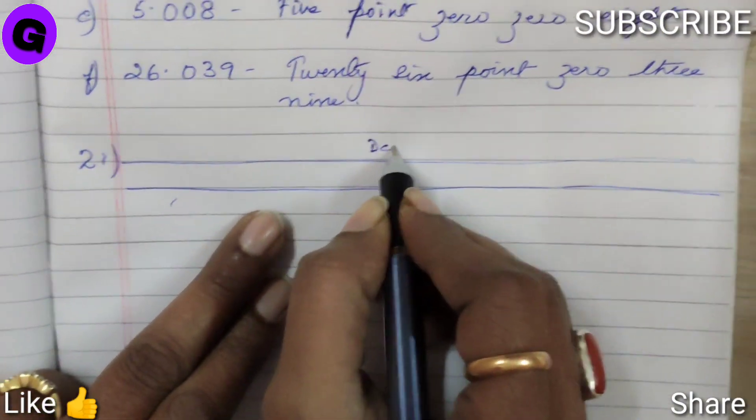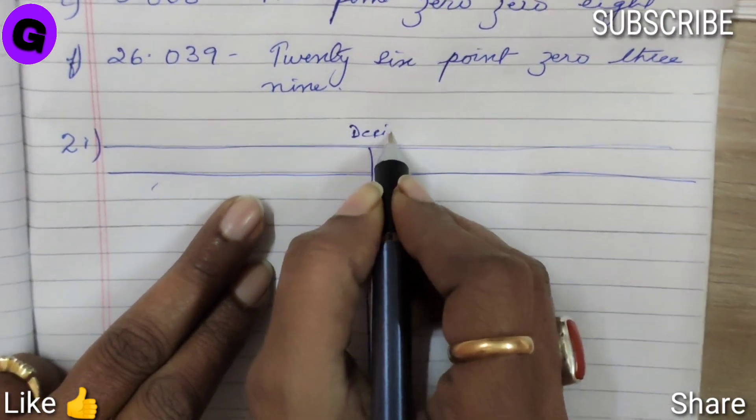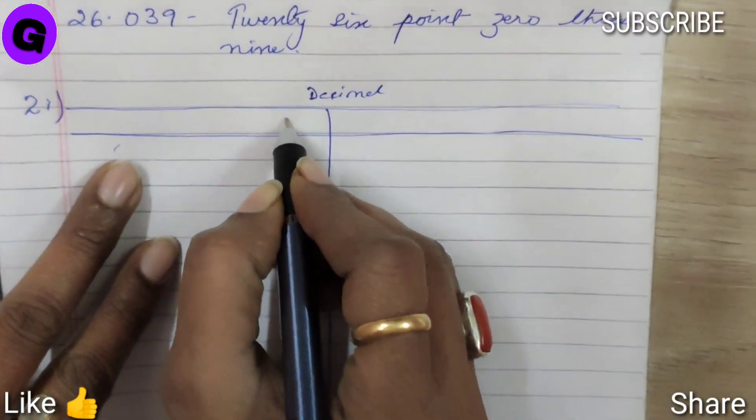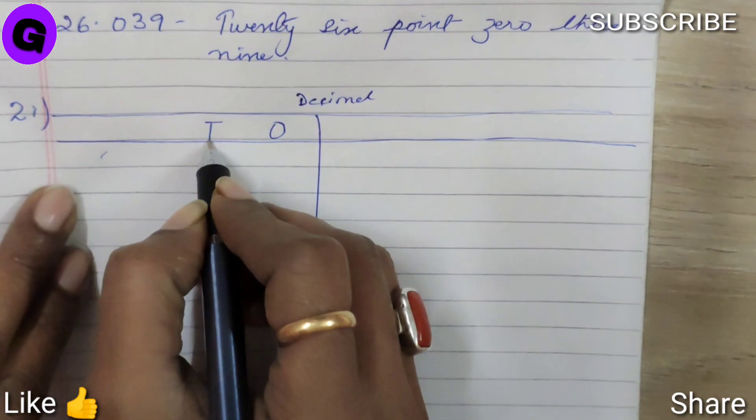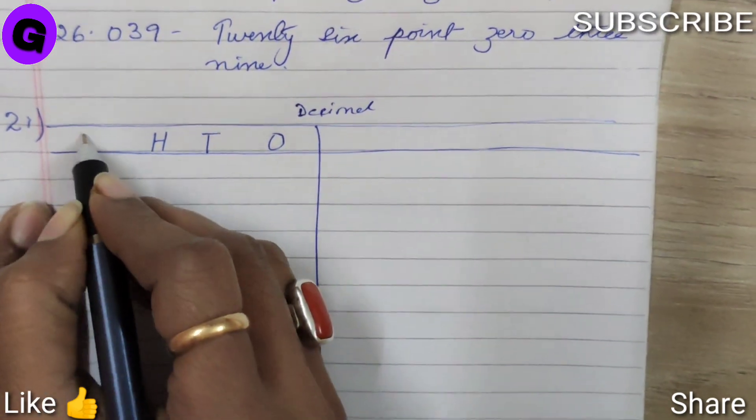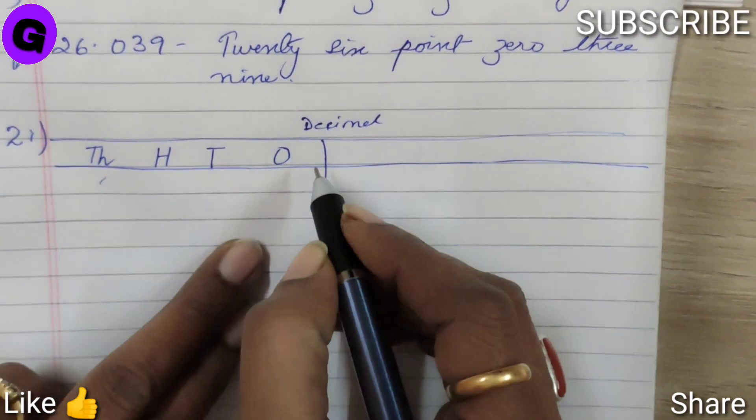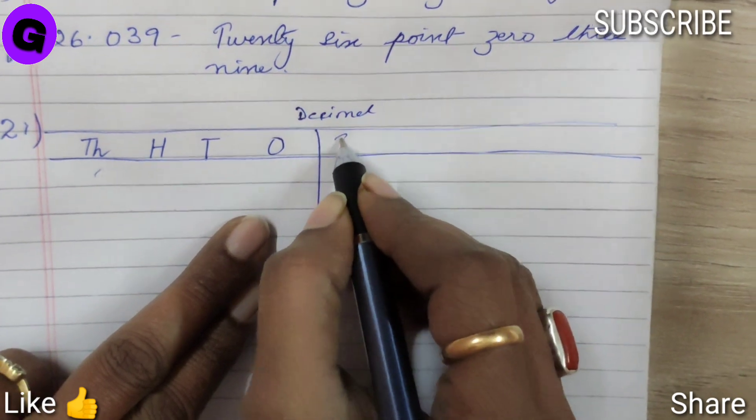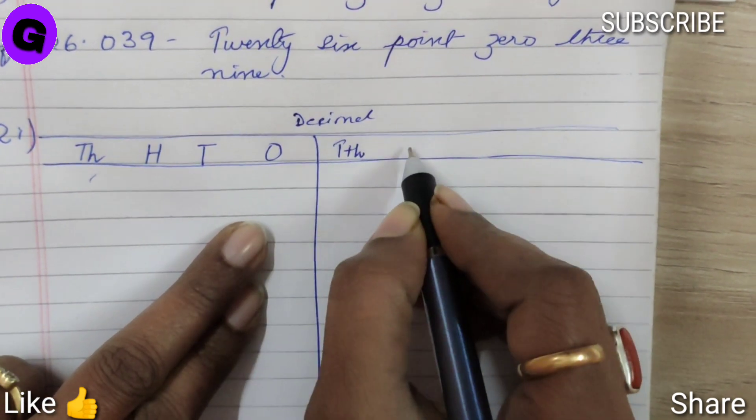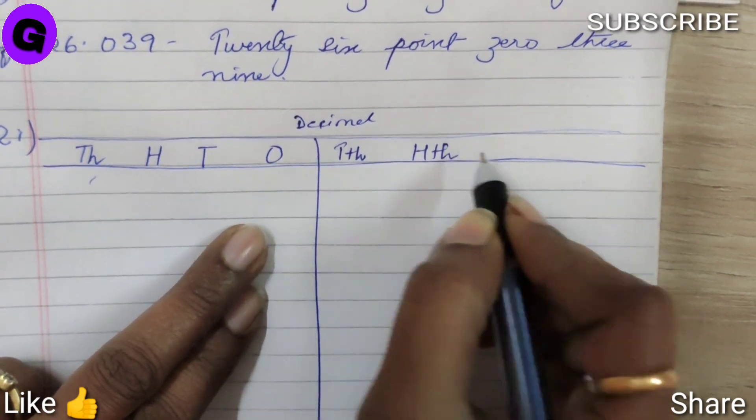This is the decimal point. Ones, tens, hundreds, thousands, and after decimal is tenths, hundredths, thousandths.